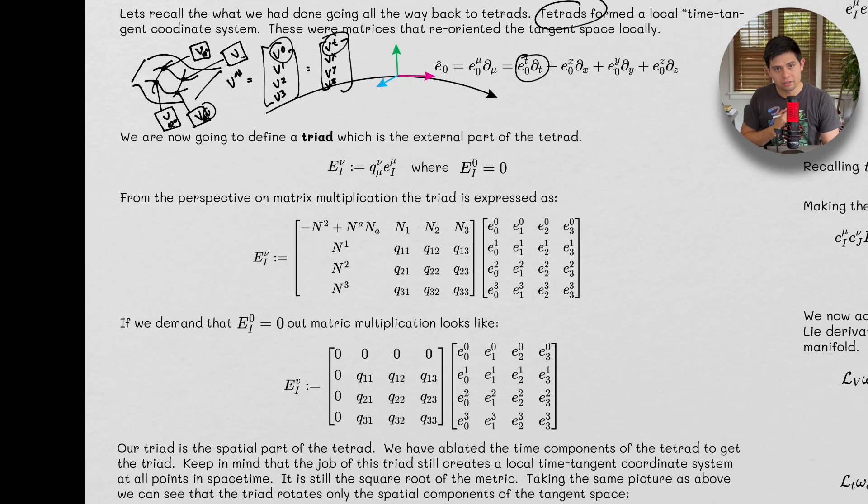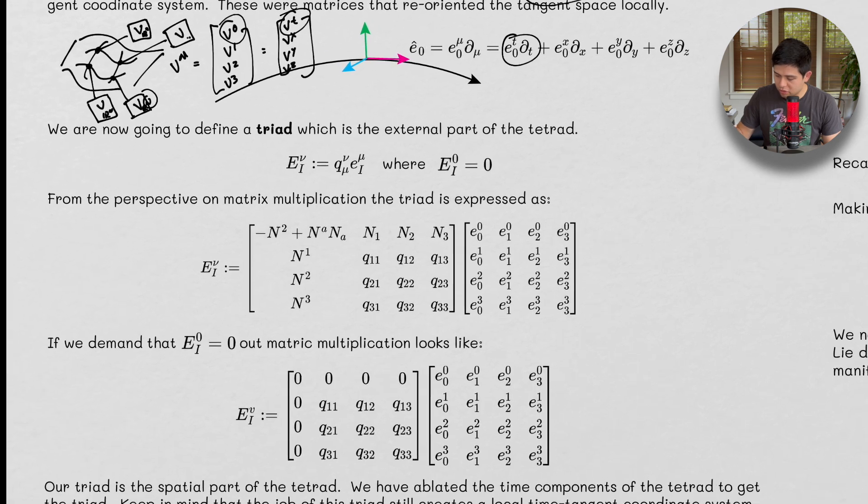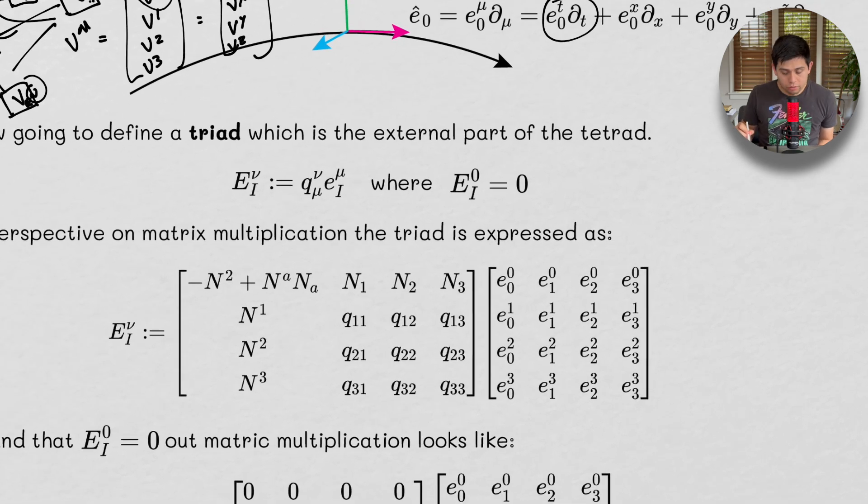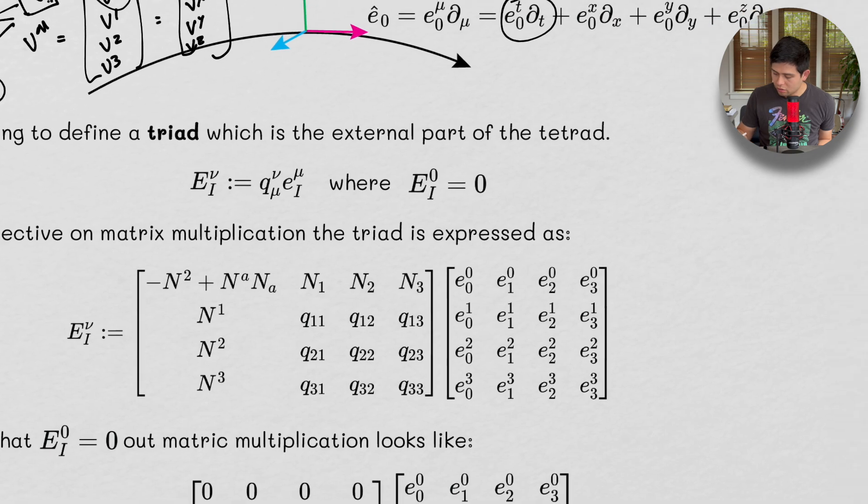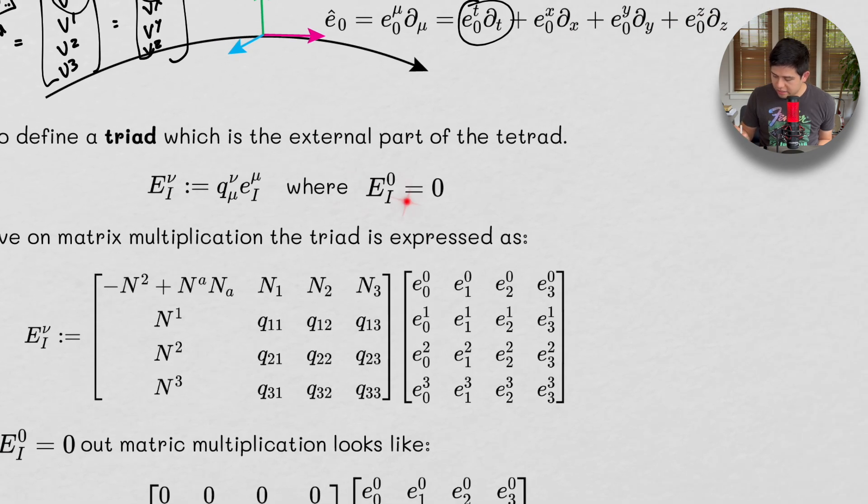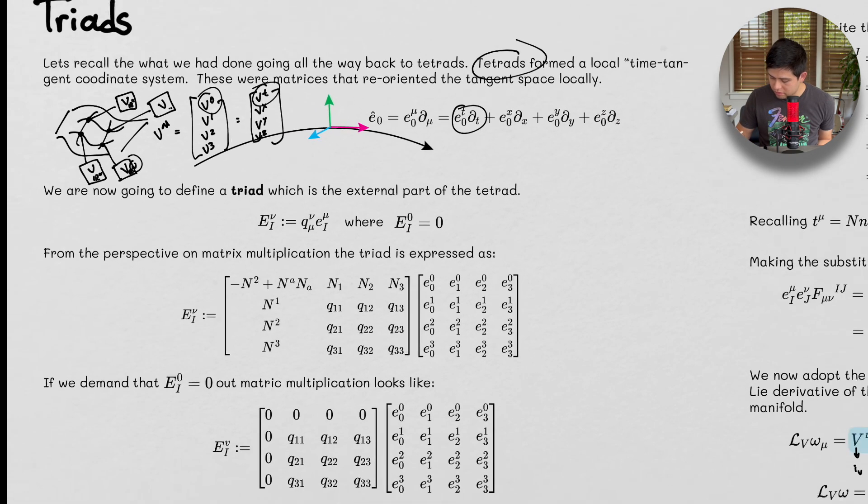So we're now going to define a triad. A triad, which is the external part of the tetrad. And by external part, we mean the spatial part. So a triad is going to be given to us by an uppercase E. And we're going to define it as the spatial part of the metric q, which is what we defined during our ADM formalism, contracted over our tetrad, where E_I^0 is going to be zero.